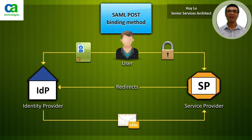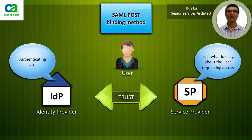In step 5, the service provider validates the SAML assertion and allows the user through to the target resource. Note that in this post binding method there is no direct communication between the identity provider and the service provider. The service provider would accept the SAML assertion from the user and validate that SAML assertion.